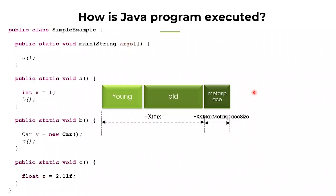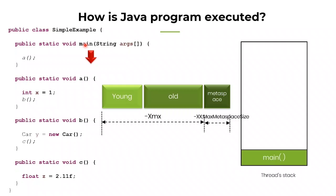Now a thread comes to execute this program. Visualize the red arrow mark as the thread. When a thread comes, it has a thread stack — this thread stack is coming from the others region. When a thread executes the main method, it adds the main method into its stack frame. Since it is the very first method executed, this is the very first stack frame of this thread.